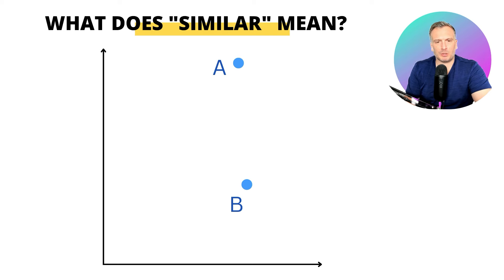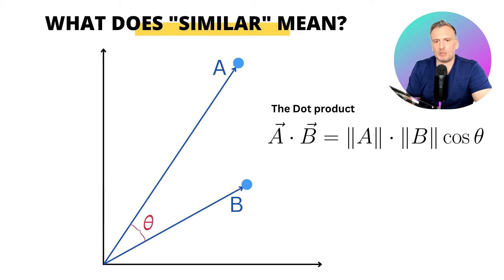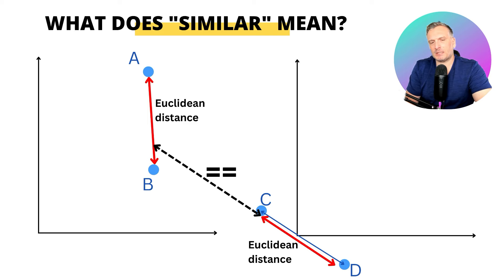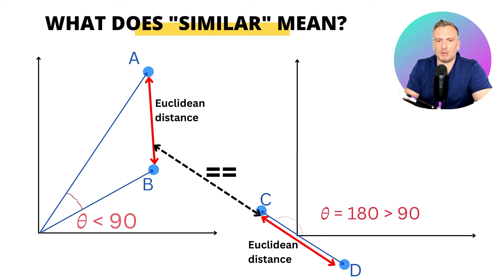We could also measure the dot product between those two vectors. It takes into account the angle between those two vectors and the magnitude of those two vectors. Let's consider those two sets of points A and B, and C and D. You can see that we measure the same Euclidean distance between those two sets of points, but the angle with respect to the origin is very different.